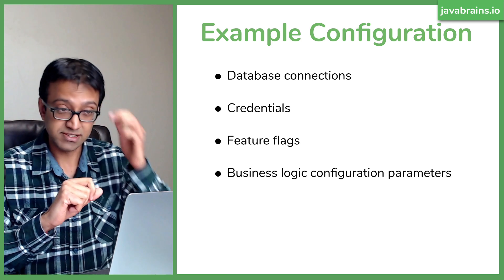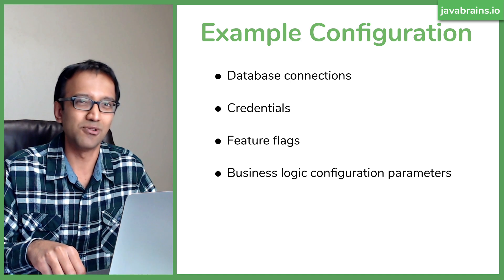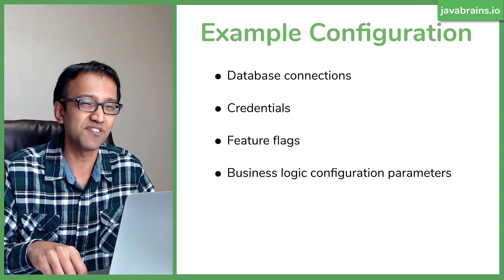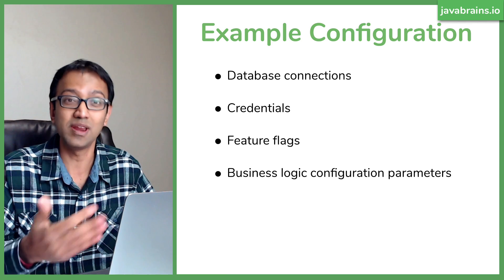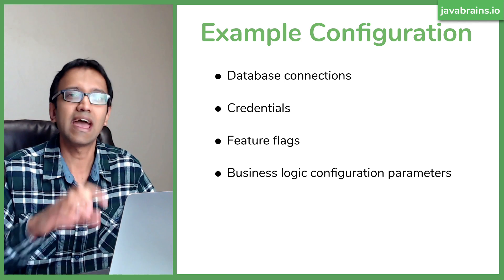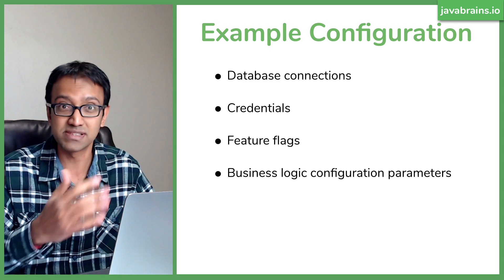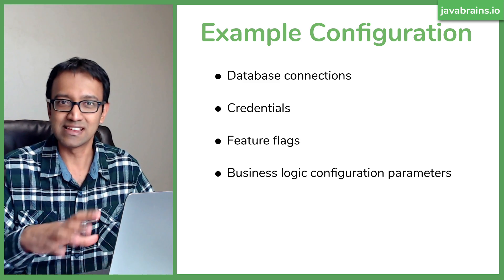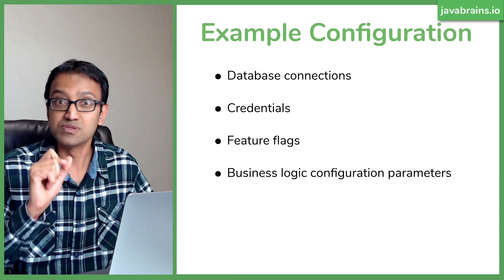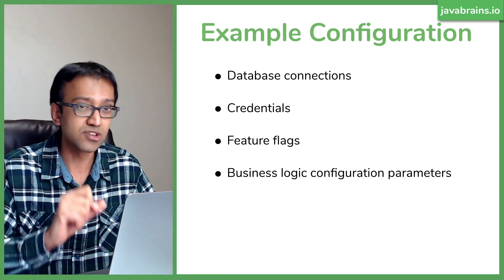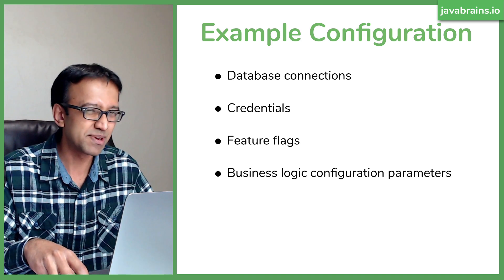Business logic configuration parameters are another example — say you have an online store and want to experiment with a 15% discount, then change it to 20%. This is normally handled via database values and an admin screen, but some people also use configuration files for business logic parameters, although that's a bit less common.